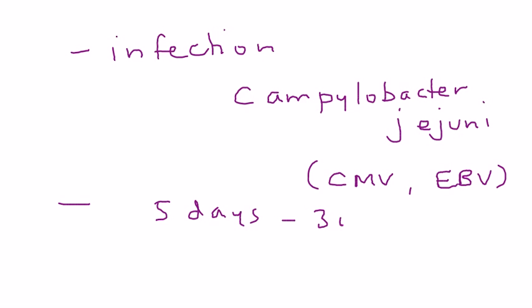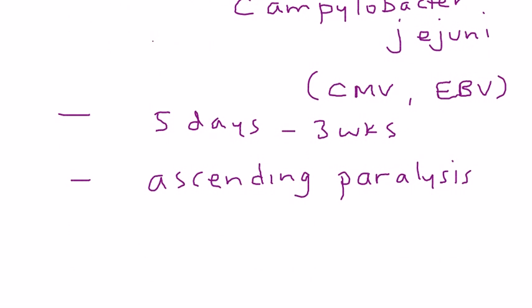After this infection, about maybe five days to three weeks later, the person starts to develop something called an ascending paralysis. What that means is that from bottom to top, from their legs going upward, they start to get this paralysis. So they're infected and then some days or weeks later they start to get this ascending paralysis.